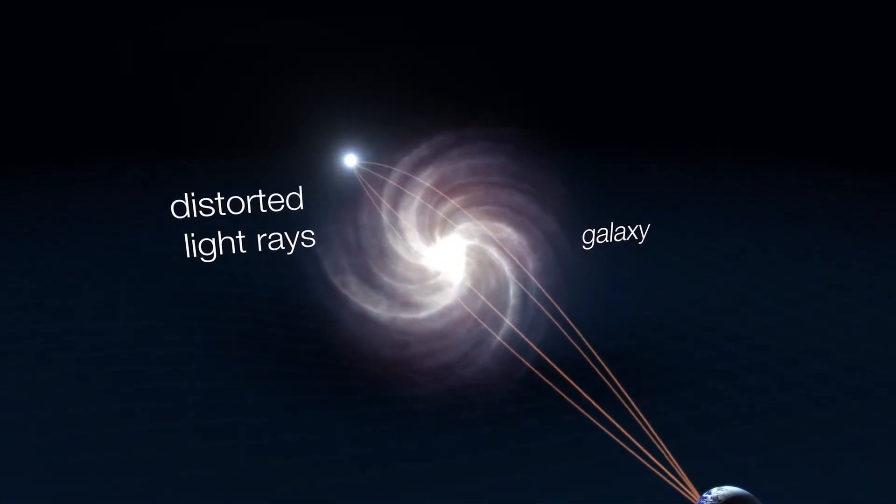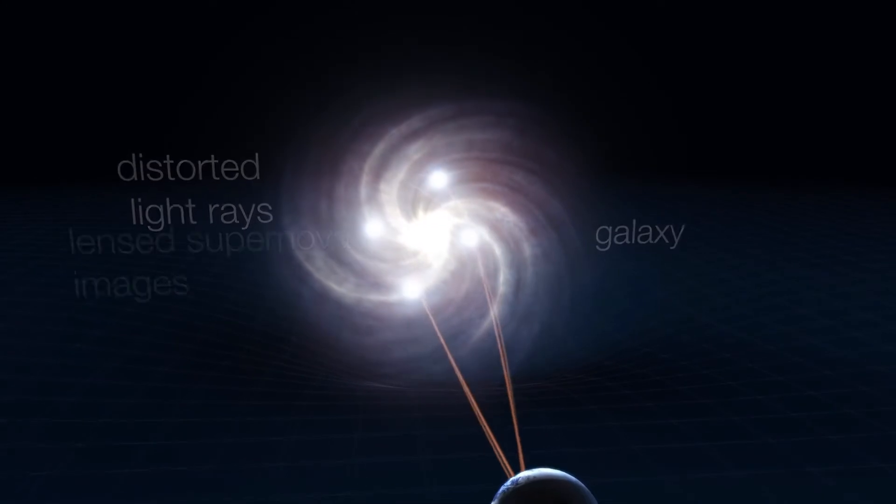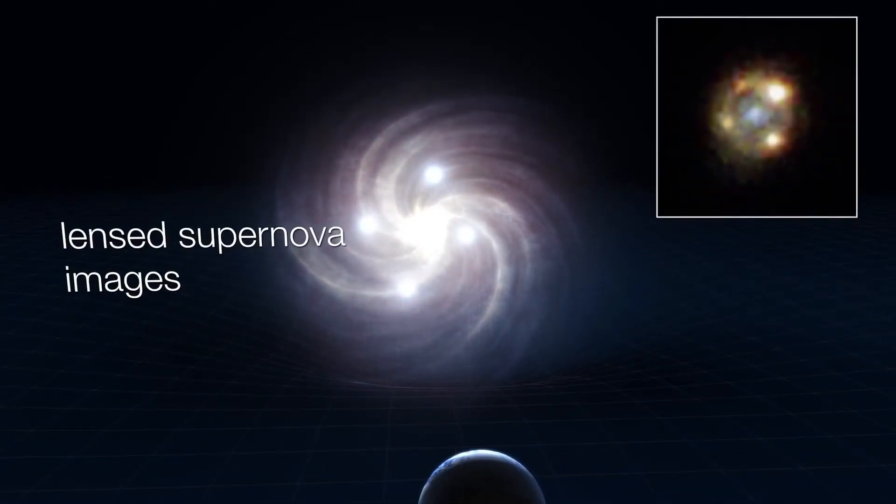Light from distant objects traveling through that warped space is curved away from its straight-line path as if passing through a lens.